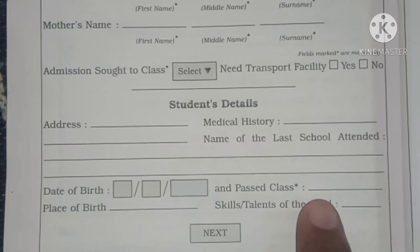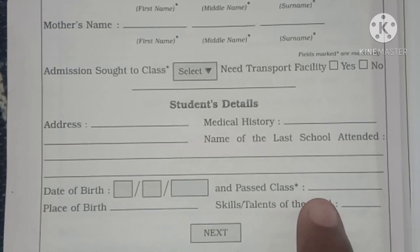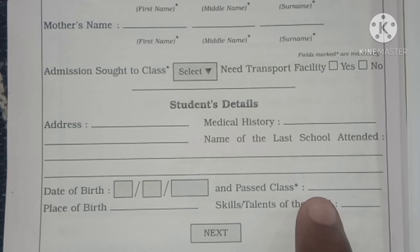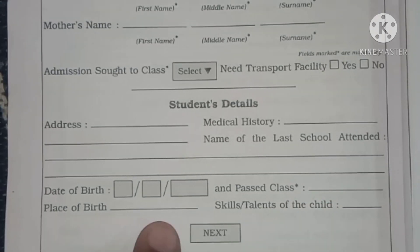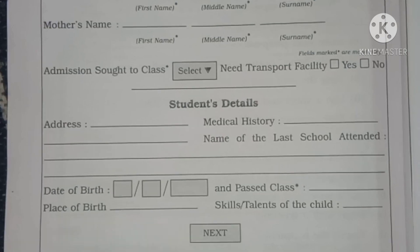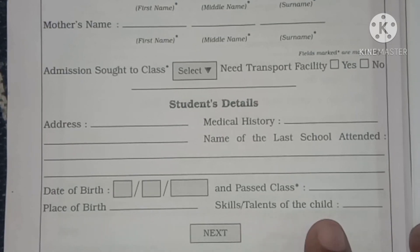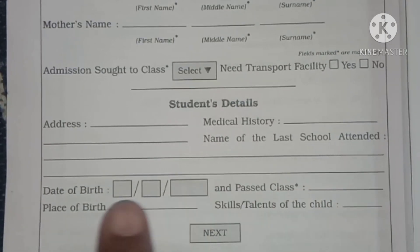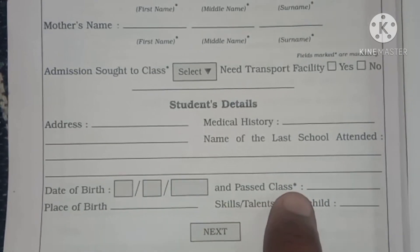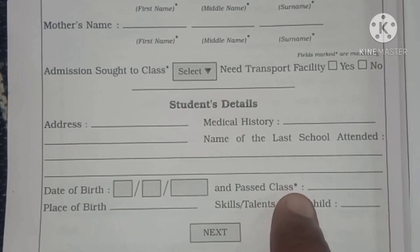Past class — our past class, manja aapun kunta warg past jalo ho. Place of birth — janma tikan. And skills, talents of the child. Look at this symbol — these are mandatory fields, compulsory fields, y aaple la bharna chai.